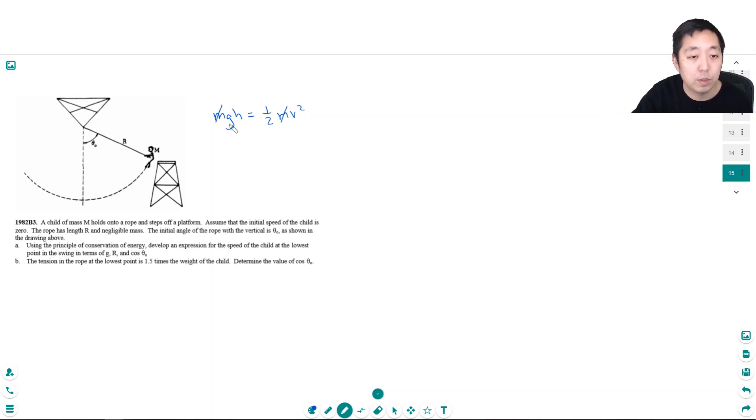The mass actually doesn't matter in this problem. So v, because at the bottom it has no potential energy and all kinetic energy, v is equal to the square root of 2gh. That's in principle what we want to do.